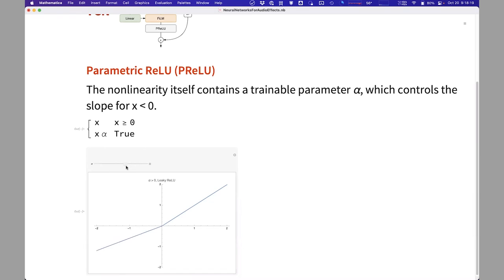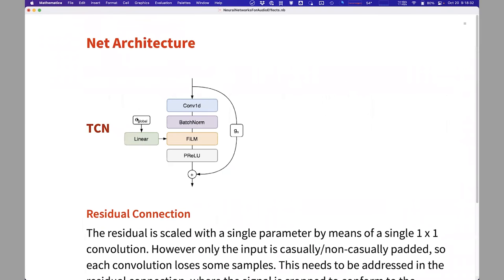So if the slope is zero, we get a normal ReLU non-linearity. If it is different than zero, we get what is called the leaky ReLU. And this alpha parameter is trained during the main training.